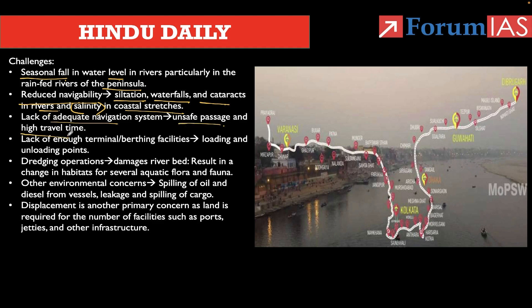With a proper navigation system, travel time would be lower and passages would be safer. Third: lack of adequate terminal and berthing facilities. After establishing ports, berthing facilities are needed to load and unload consignments. India lacks adequate berthing facilities for inland waterways. Dredging operations are also needed due to siltation, but they impact the aquatic flora and fauna of river regions.